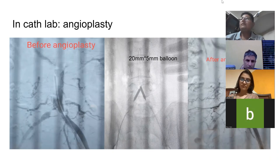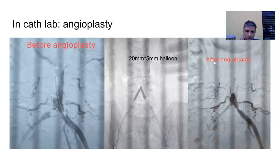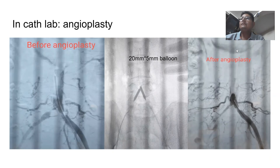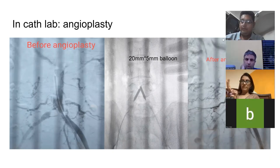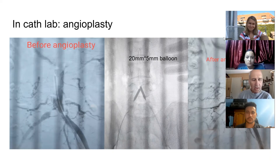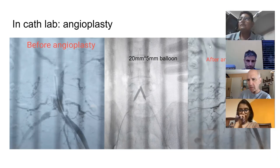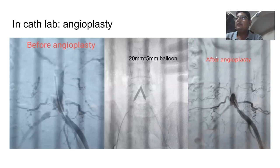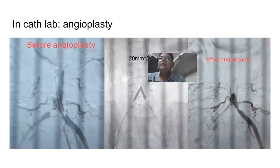The left side was much better before, as the ABI and pulses were normal. The right side was the main problem. On the right iliac, post-angioplasty imaging doesn't show it clearly, but a delayed picture confirms it is still open, and there is slightly less stenosis even on the right side.